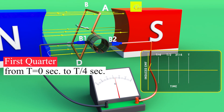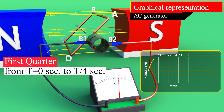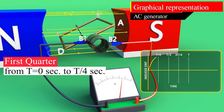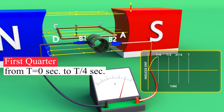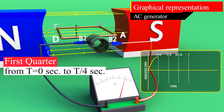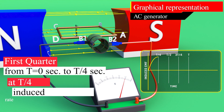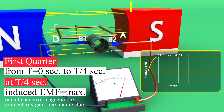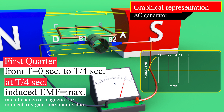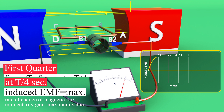For the first quarter rotation, from T equals 0 to T/4 seconds, part AB moves down and part CD moves up. In this period, the induced EMF increases from zero to its maximum value. At T/4 seconds, the armature is in a horizontal position relative to the magnetic field, and the rate of change of magnetic flux momentarily reaches its maximum value. Therefore, the induced EMF at this position is maximum.